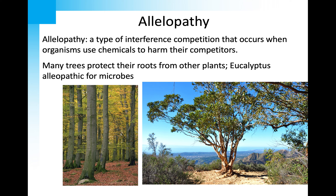Another less aggressive type of interference competition is allelopathy. Many trees protect their habitat by sending out toxic chemicals through their roots to keep other plants minimum distances away. This can sometimes result in a dispersion pattern where plants are all equally distanced from each other. An example is allelopathy in the creosote plant, which can result in regular dispersion between individuals to help them compete for limited soil nutrients.